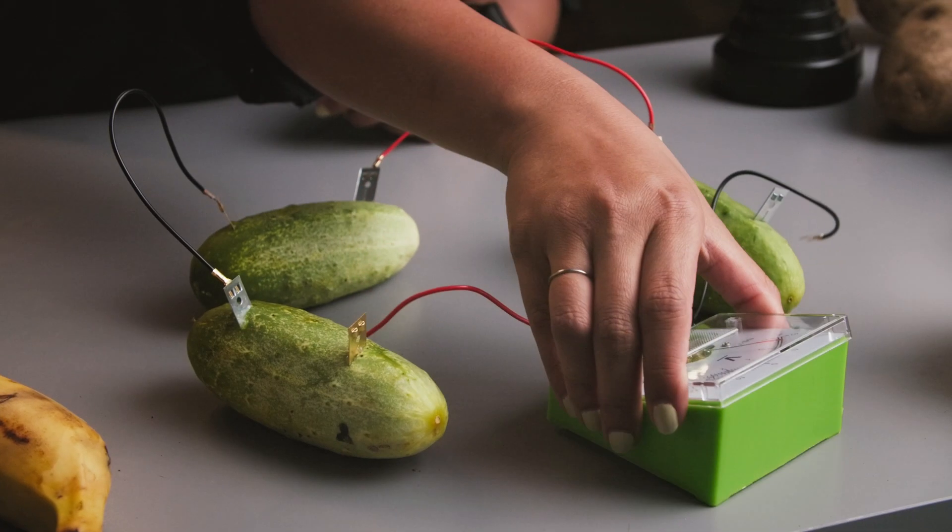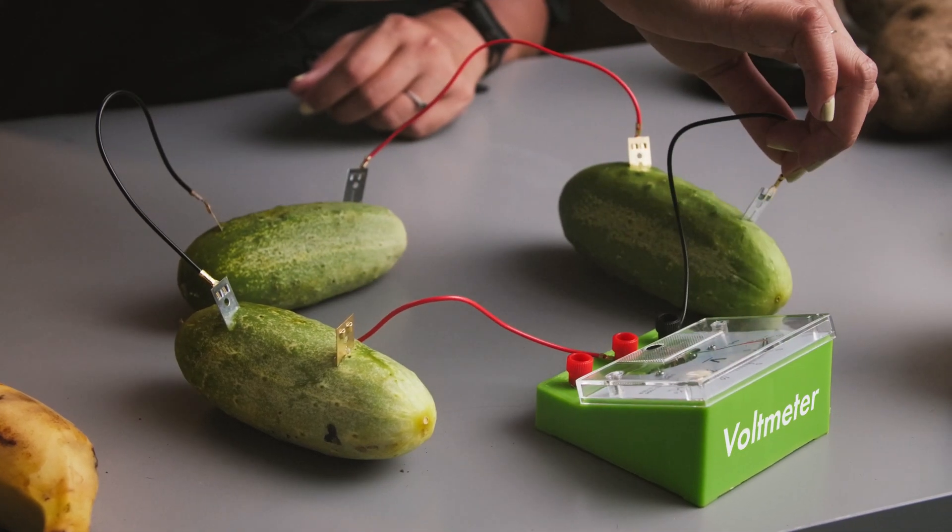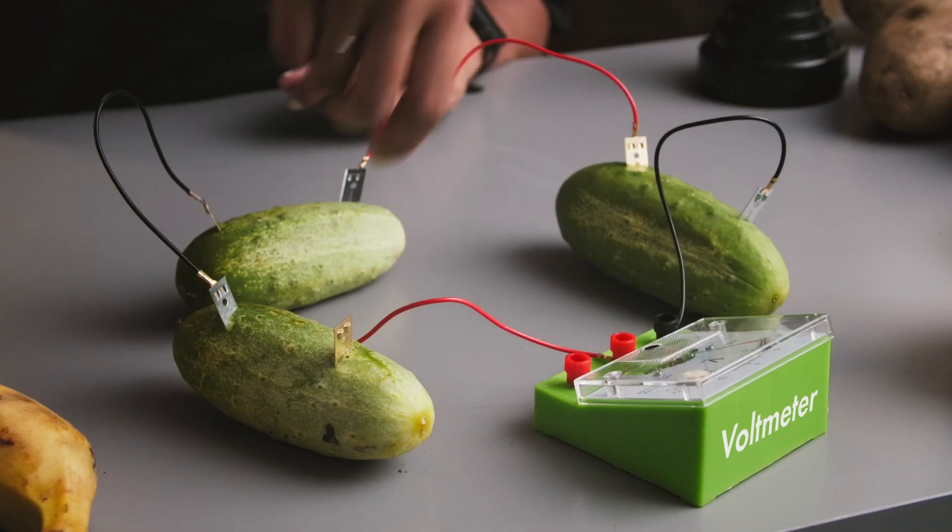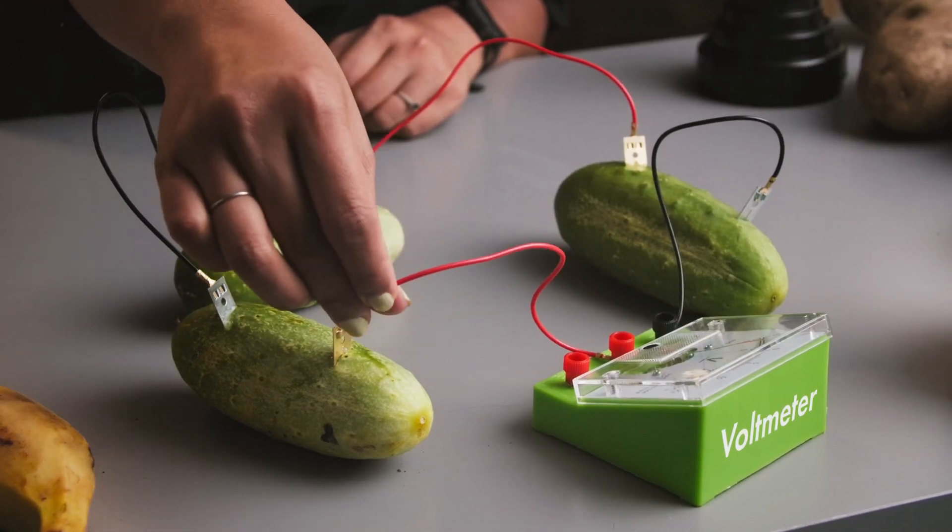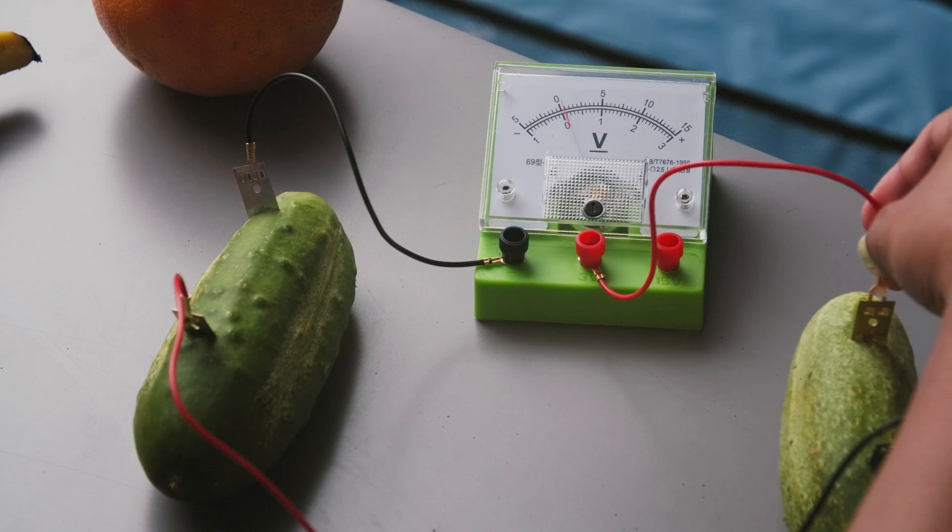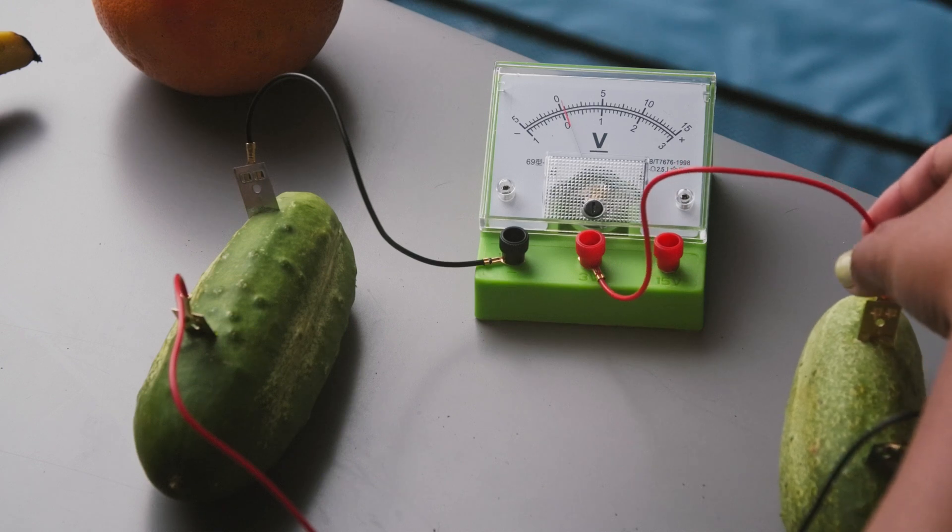Now that is how you generate electricity using fruits. Before we end this episode, let's try one more thing. How much voltage is generated by fruits? Let's switch the LED with our voltmeter to measure the voltage. These three small cucumbers measure less than 0.1 volts. Thank you for watching this video. I will see you next time.